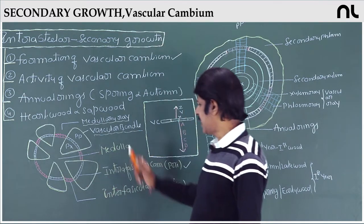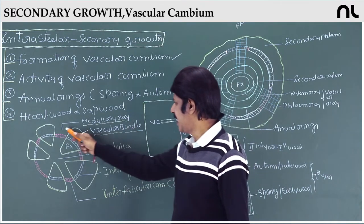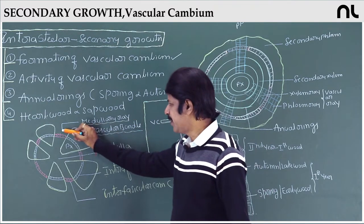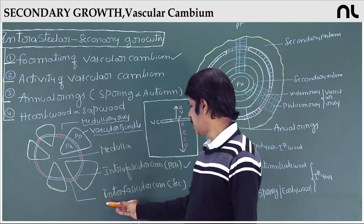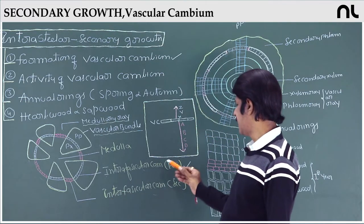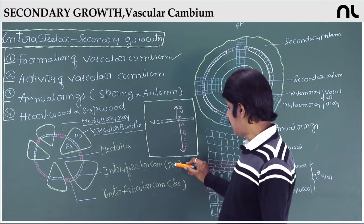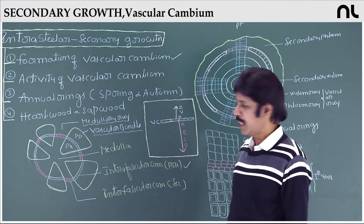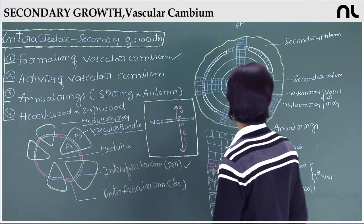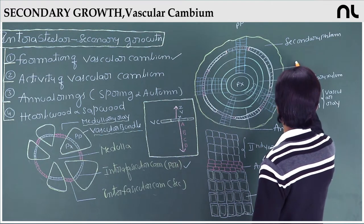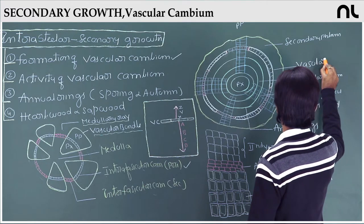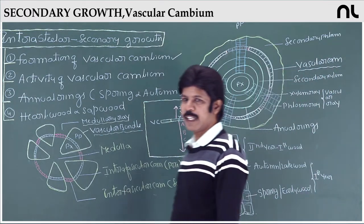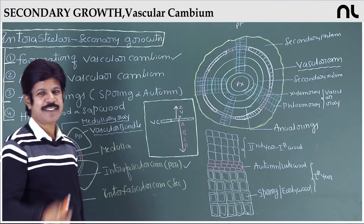The medulla is parenchymatous. The medullary ray is also parenchymatous. The medullary ray undergoes de-differentiation and forms strips of cambia — what we call interfascicular cambium. The intrafascicular cambium is primary, the interfascicular cambium is secondary, and collectively this is called vascular cambium. This vascular cambium is partly primary and partly secondary.